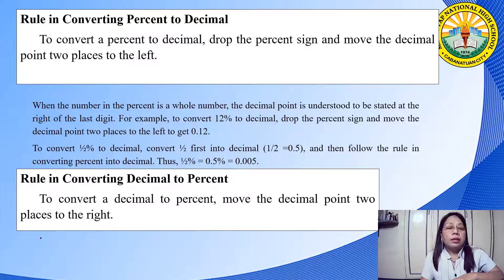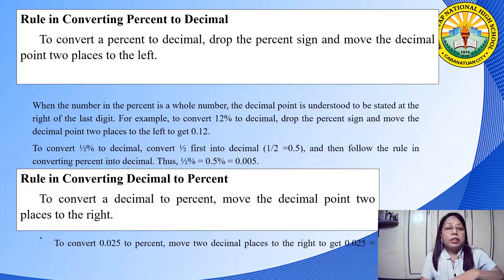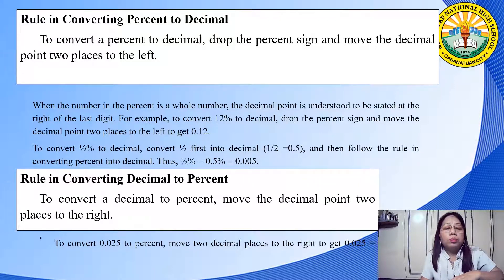Rules in converting decimal to percent: move the decimal point two places to the right. For example, to convert 0.025 to percent, move two decimal places to the right to get 2.5%. So 0.025 is equal to 2.5%.